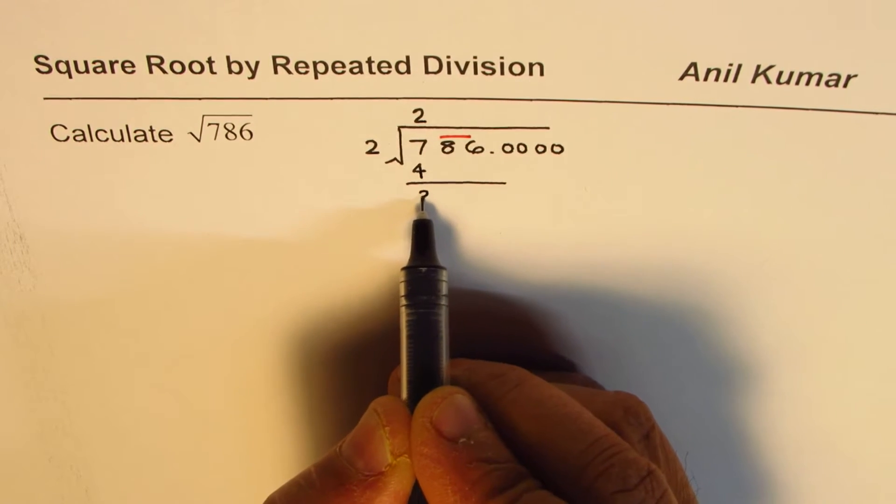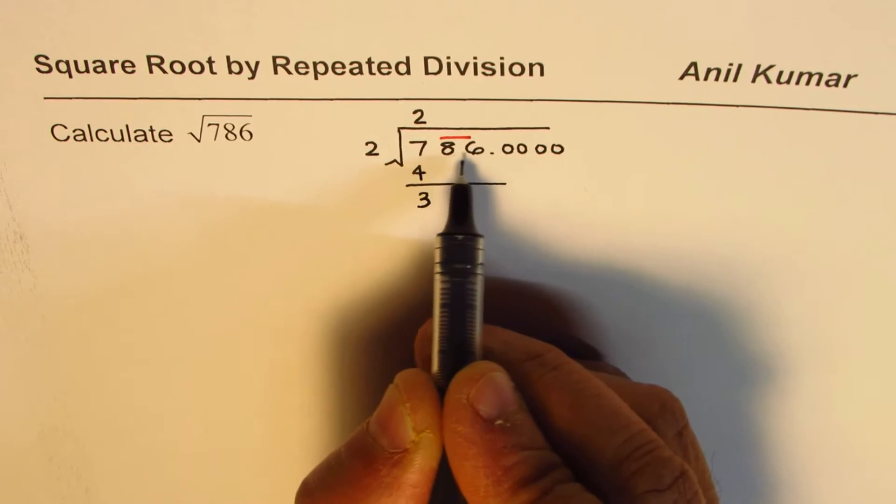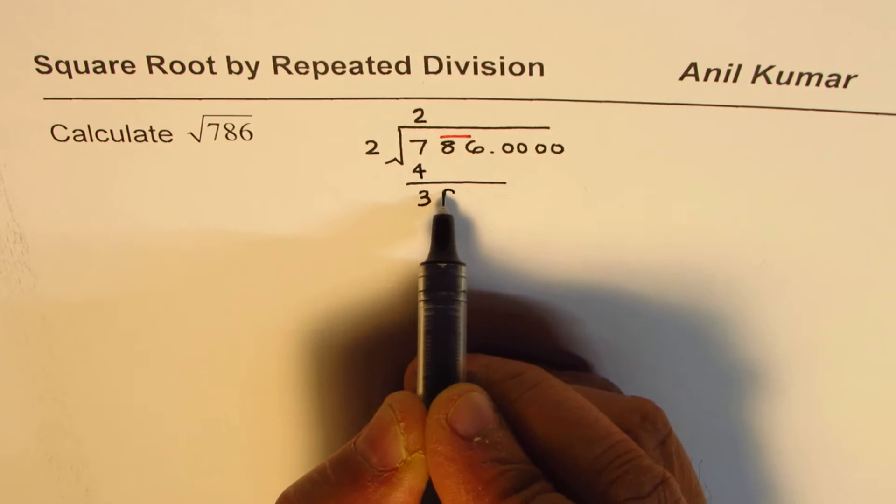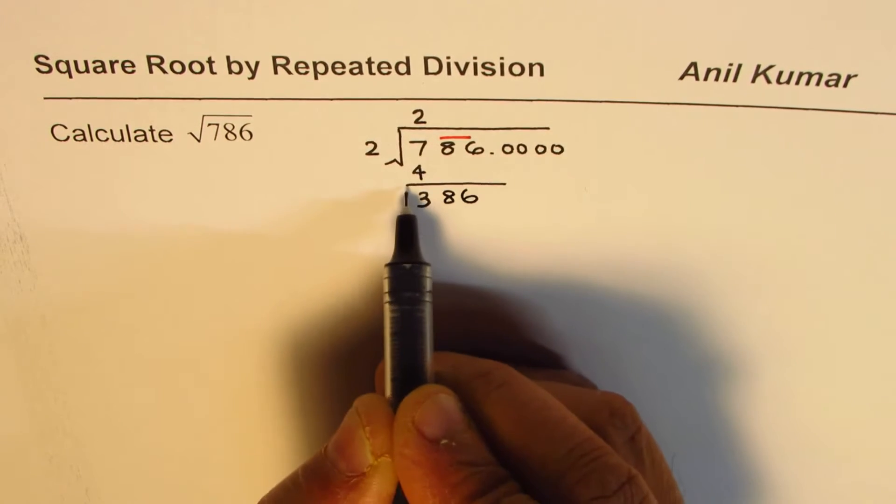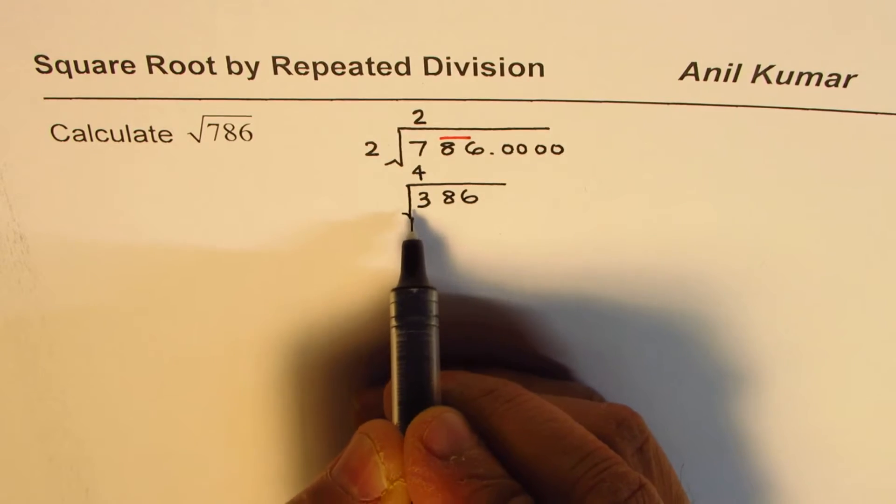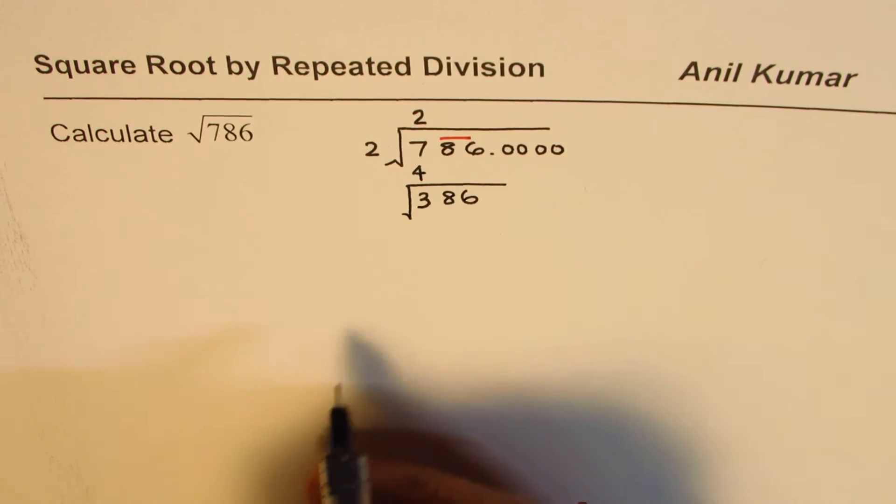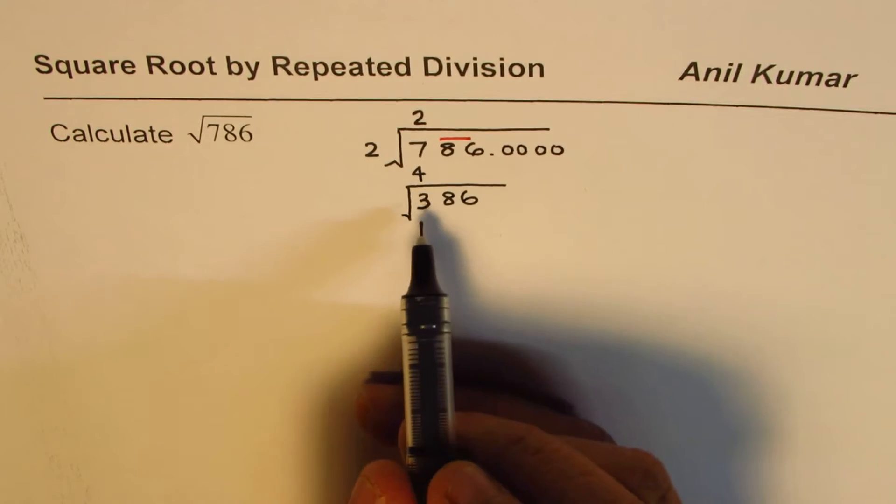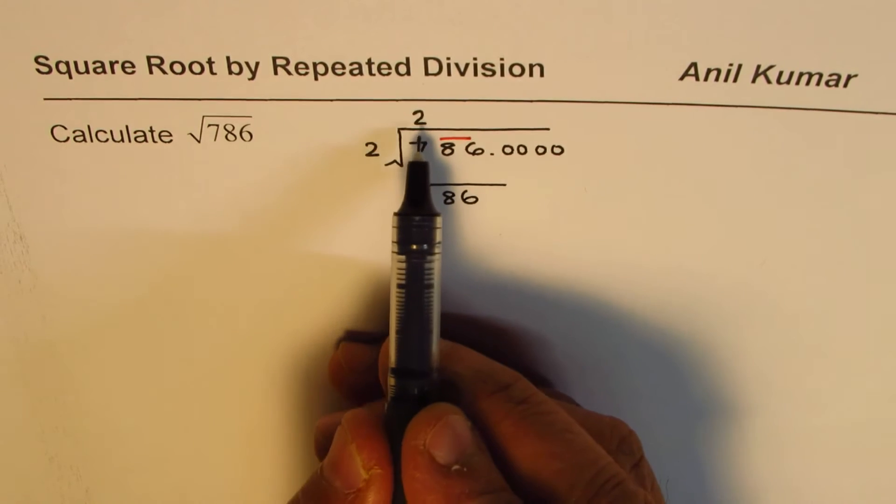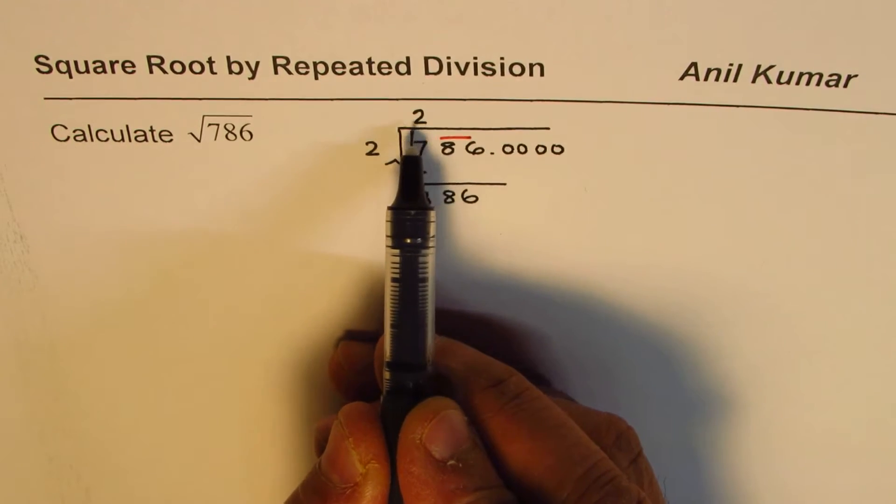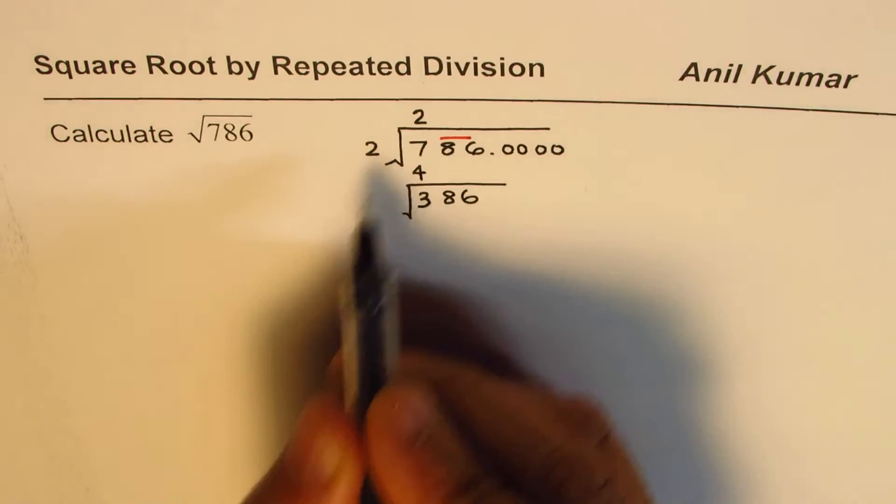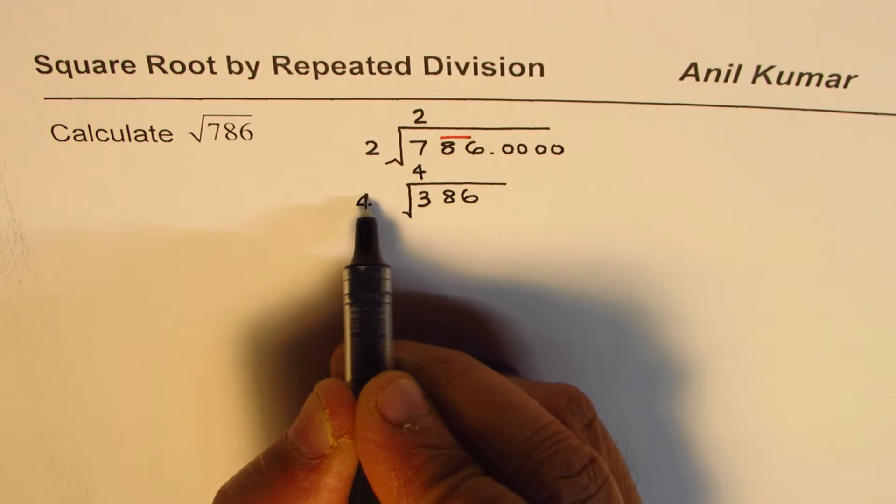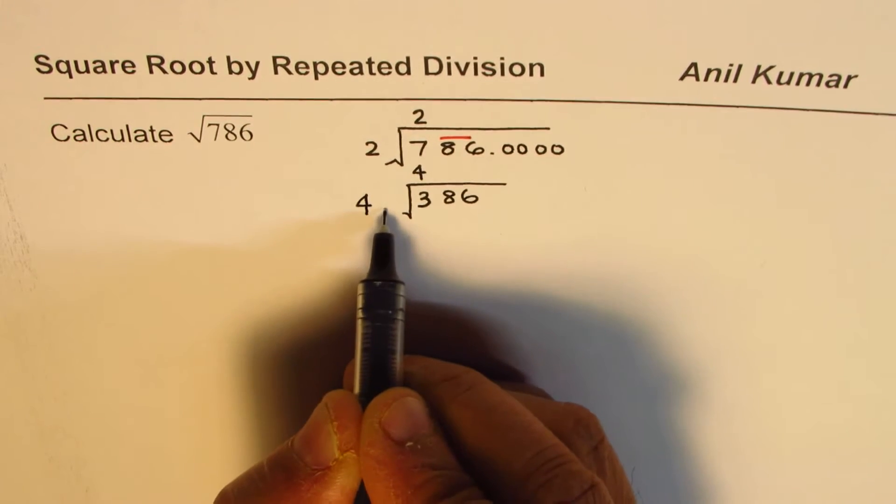Bring down the next set which is 86 for us. I'm using the square root symbol. This is kind of a special division where when we divide, we multiply the quotient by 2 and rewrite it. So 2 times 2 is 4, we get 4 here. Now we have to look for a number which when placed here, the same number could go into 386.